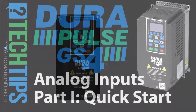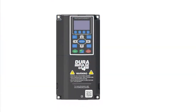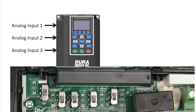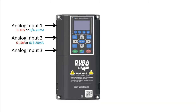All of the GS4 drives from AutomationDirect have 3 analog inputs. Analog inputs 1 and 2 have switches on a terminal board so you can switch them between current and voltage modes. Analog input 3 is a dedicated 10 volt input.